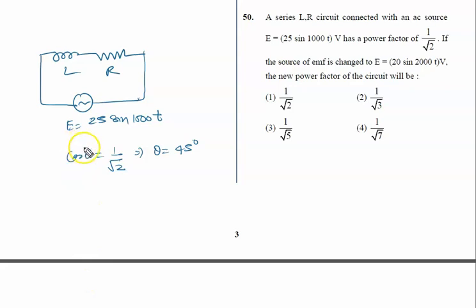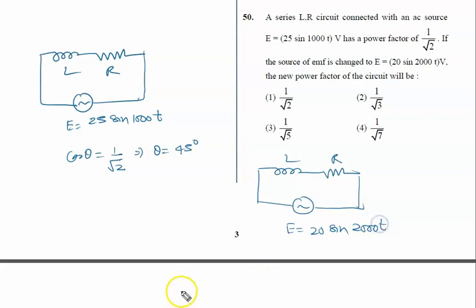If the source EMF is changed - in the next situation, same LR circuit, same L, same R - we are changing the supply EMF. It is given by E = 20 sin 2000t volts. What is the new power factor, the new cos θ'?